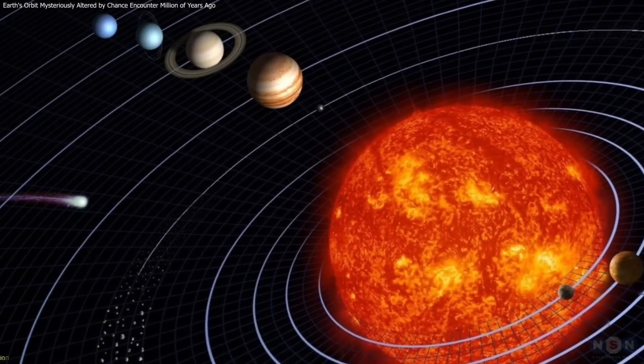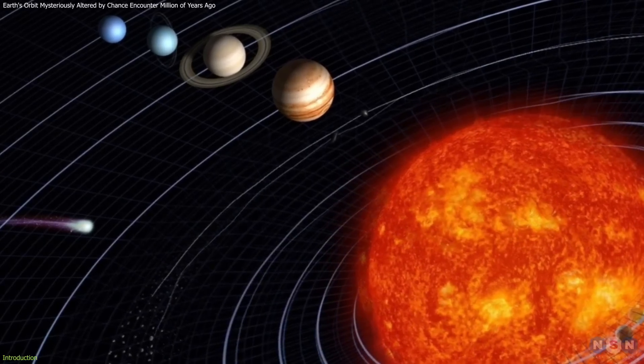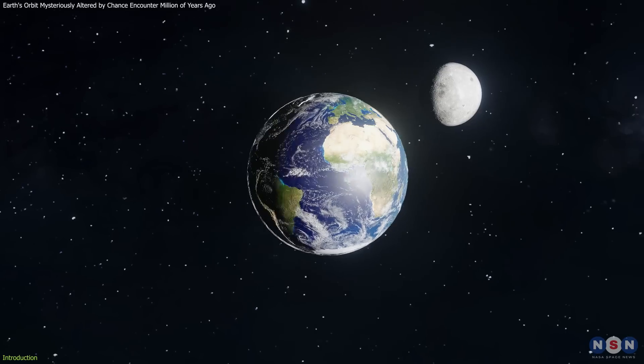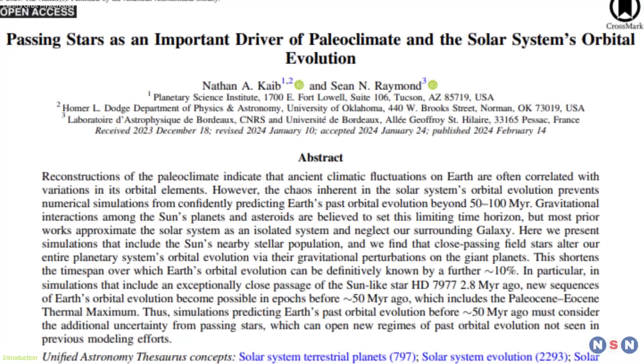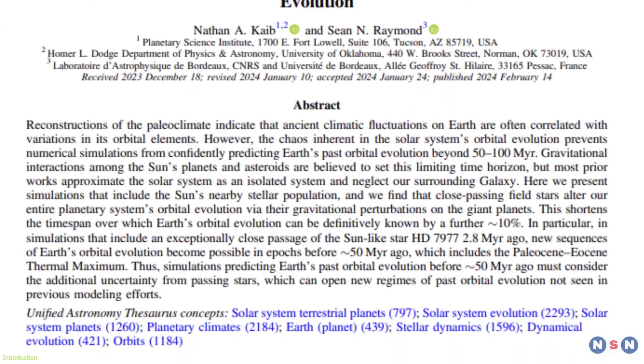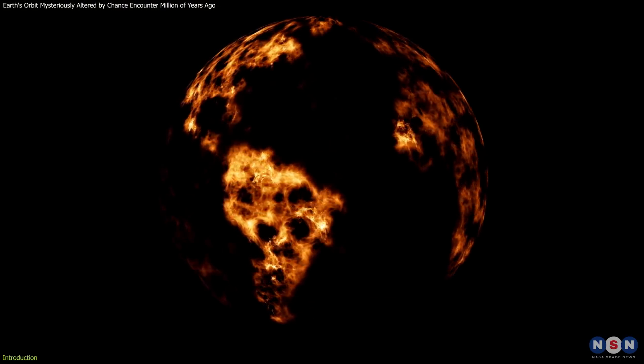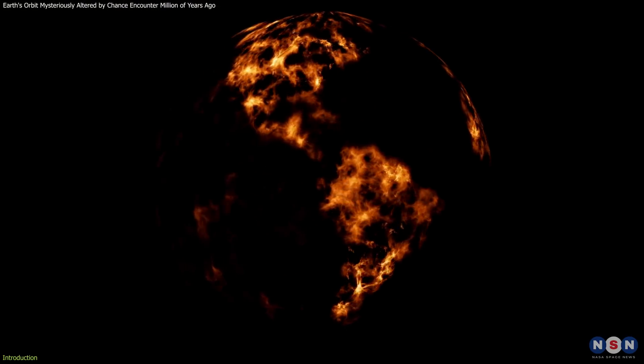Have you ever wondered what would happen if a star passed by our solar system? How would it affect the orbits of the planets and the climate of Earth? Well, a new study suggests that this might have actually happened 56 million years ago, and it could explain a mysterious period of rapid global warming that occurred at that time.